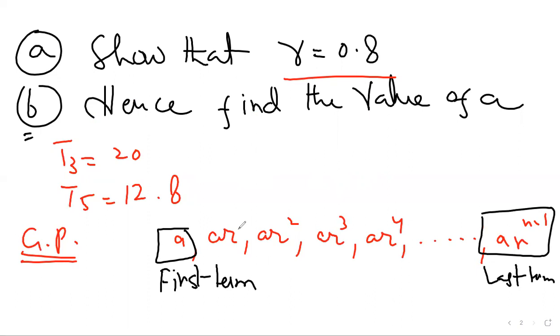Now, we need to consider this is first term, second term, and third term. T3 is equal to AR square, which equals 20.